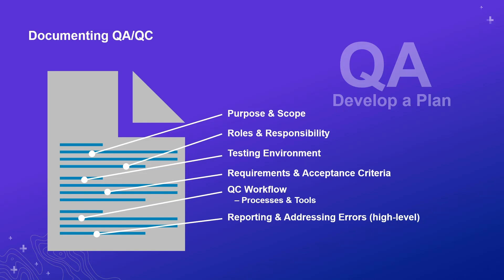Think about the acceptance criteria too — what's acceptable in your data, what kind of errors are critical, and what kind of errors are not as critical and may not have to be addressed right away. The plan should also talk about your workflow, the tools and processes you would perform to check your data. You may also want to create reports — what are those reporting requirements going to be? Maybe upper management will want to see reports showing how good or bad the data is. Having a document, even a simple one, tells you what is expected.